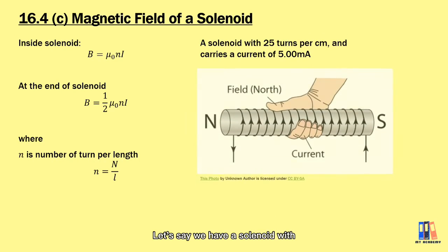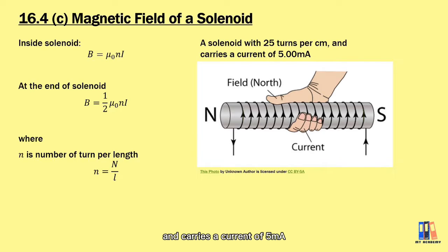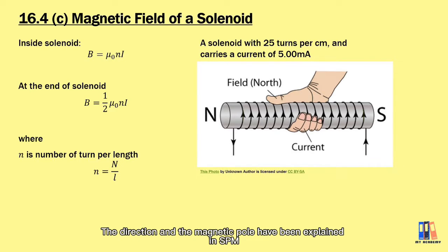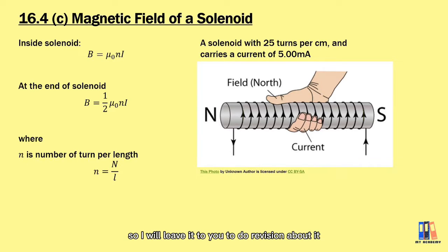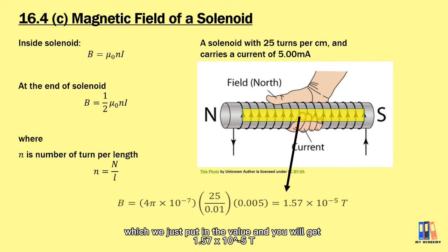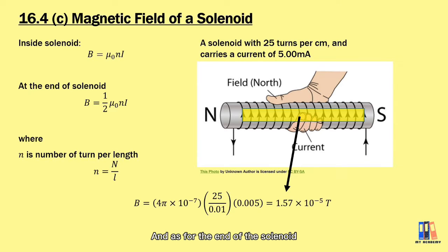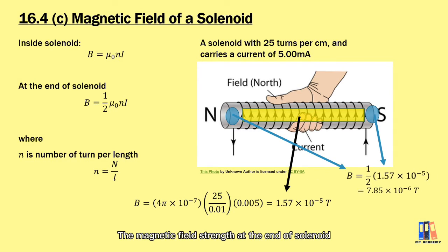Let's say we have a solenoid with 25 turns per centimeter carrying a current of 5 milliamperes. You can use the right-hand grip rule to obtain the direction of the magnetic field and the induced magnetic pole at the solenoid. Note that 25 turns per centimeter must be converted to turns per meter when substituting values. The magnetic field strength inside the solenoid is 1.57 × 10⁻⁵ tesla. At the end of the solenoid, the magnetic field strength is half of this, equal to 7.85 × 10⁻⁶ tesla.